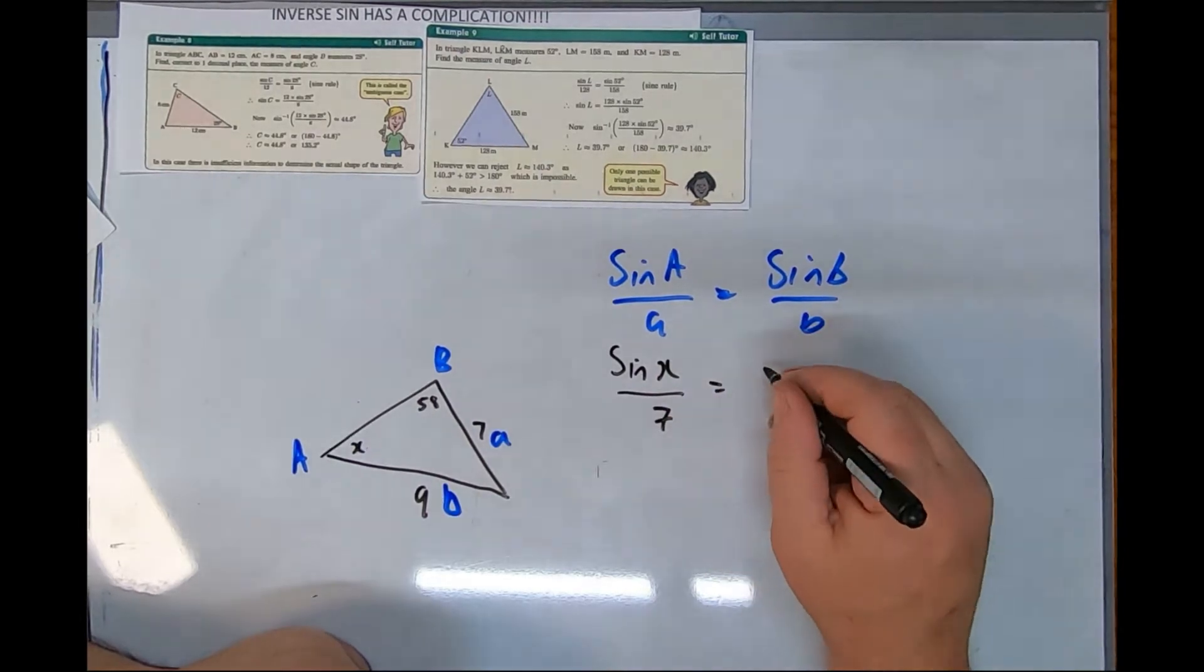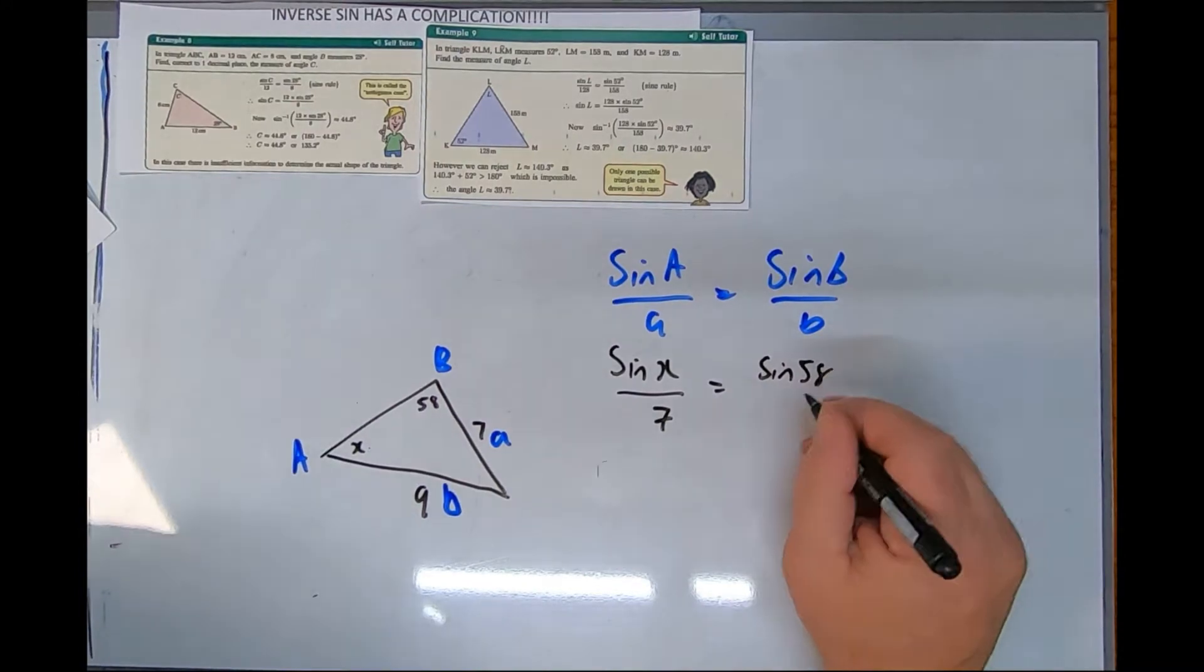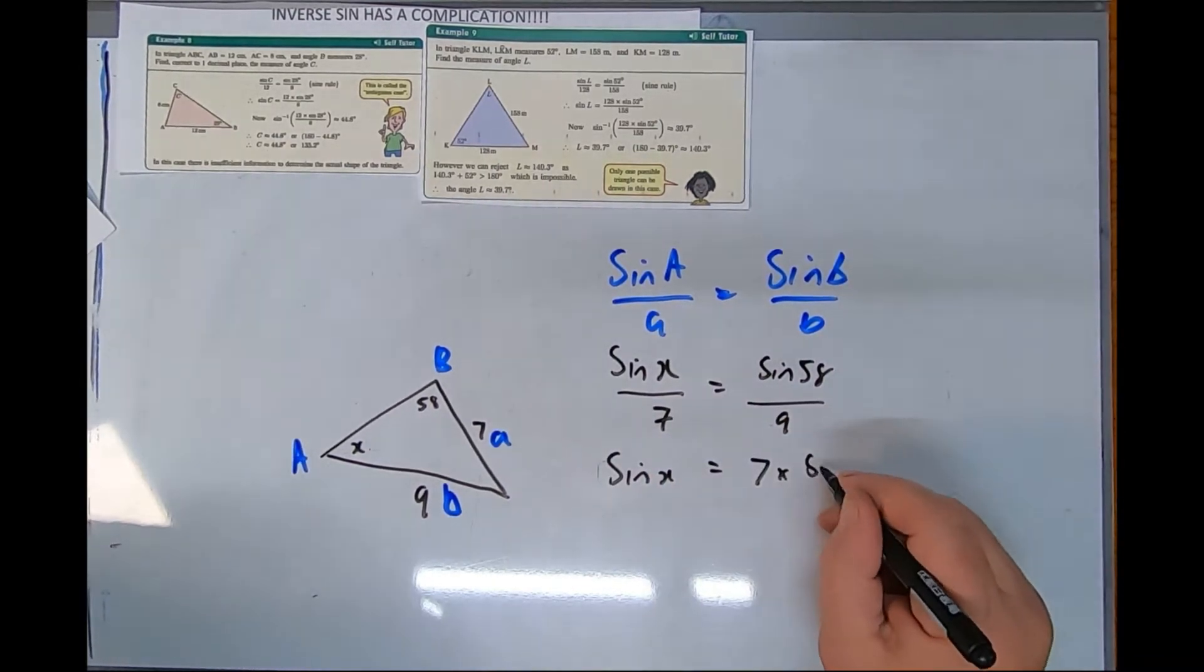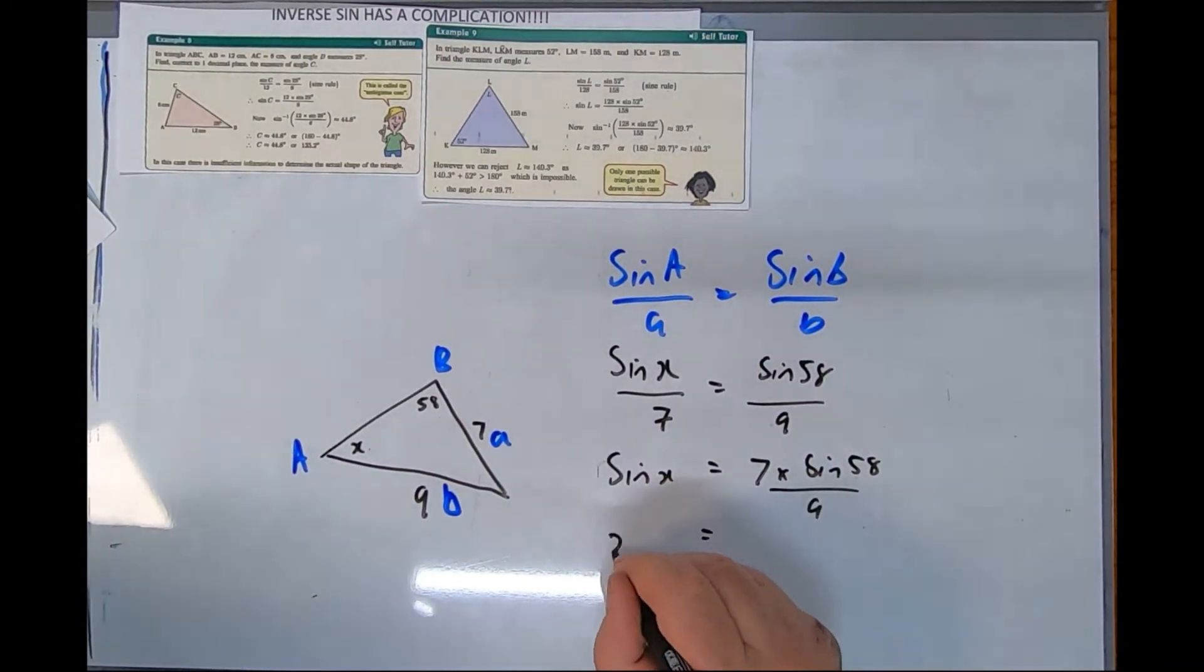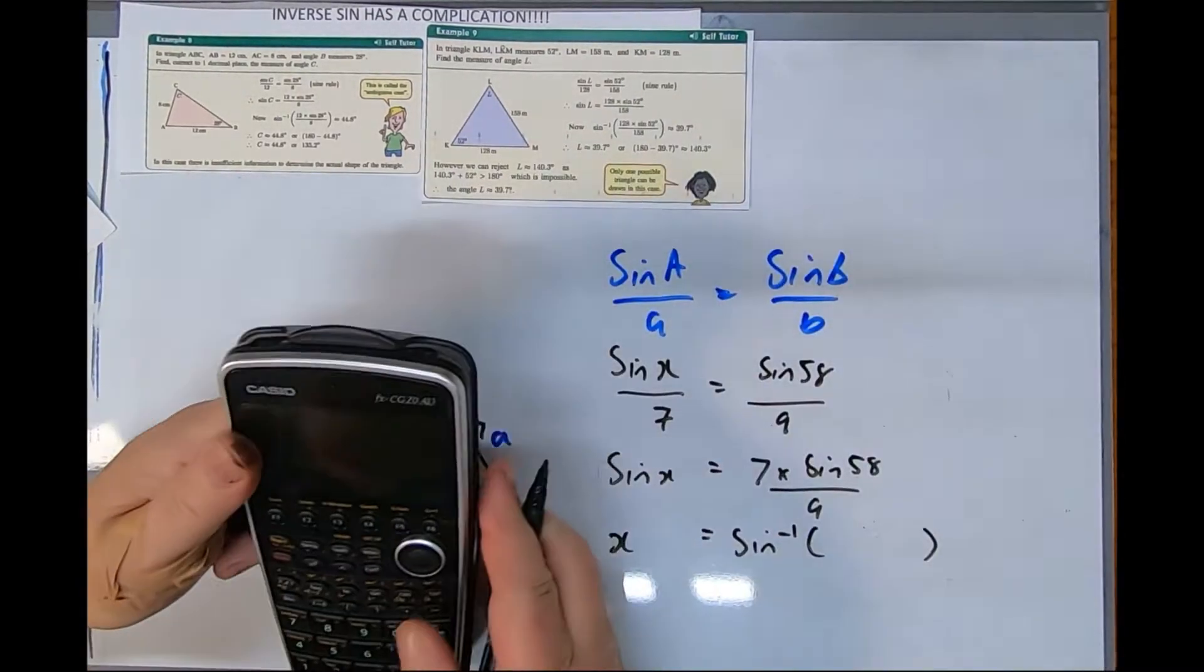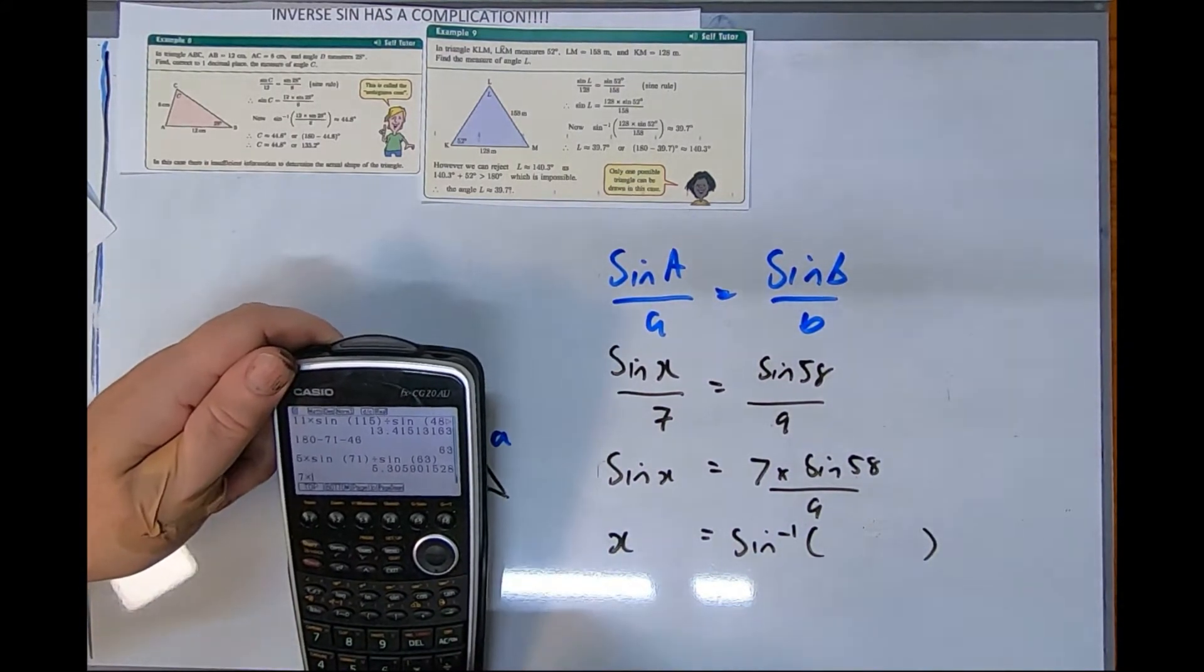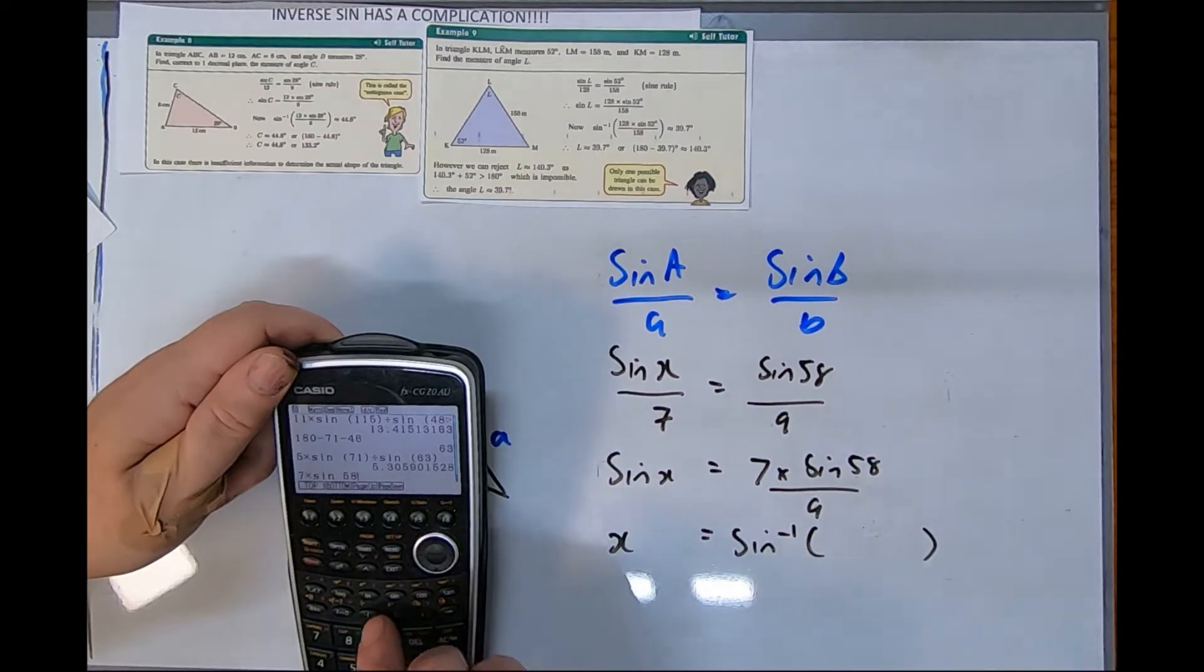Seven equals sin 58 divided by 9. I simply multiply by this free number down at the bottom, whether it's a sin or in this case a straightforward number, and we're ready to put this into the calculator.